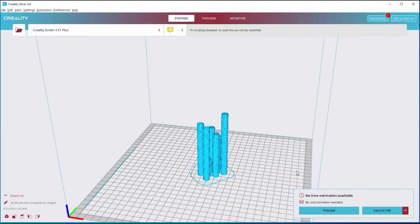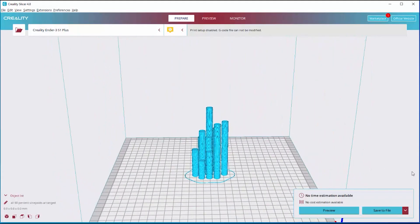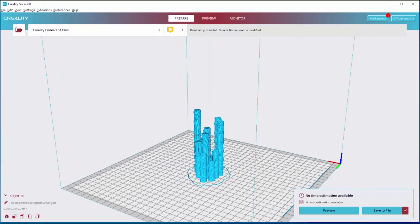In the slicer, I pulled in the ones I needed. I duplicated the ones I needed two of. I told it to auto arrange and it laid it out in this way, which is the most efficient.